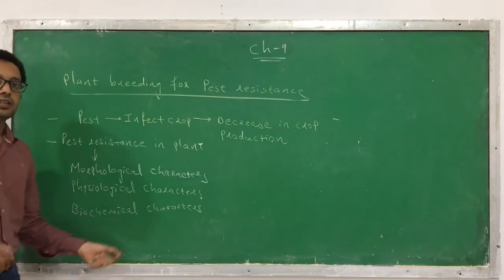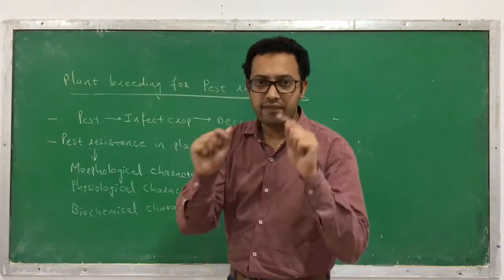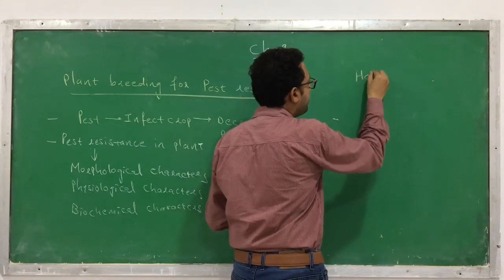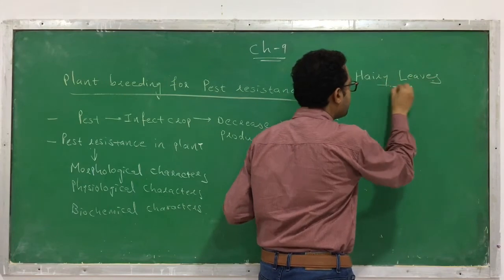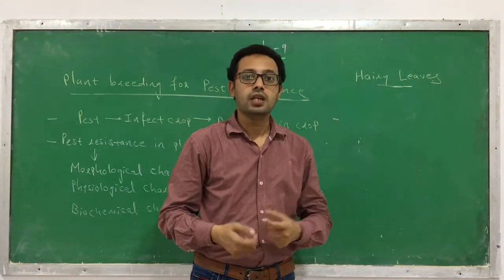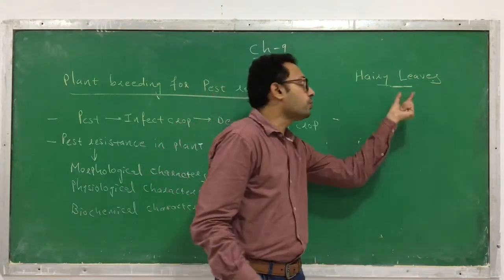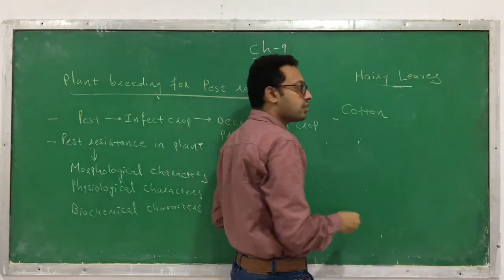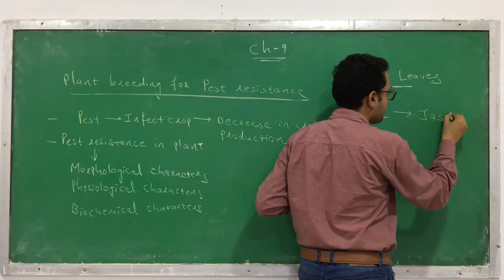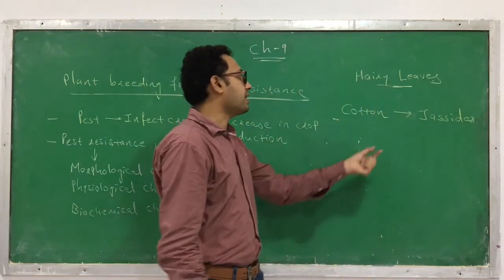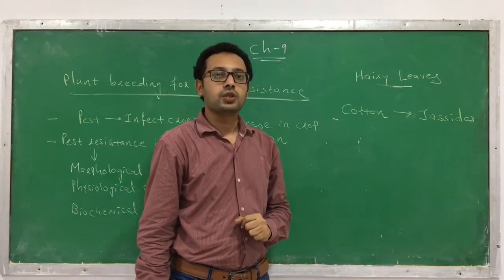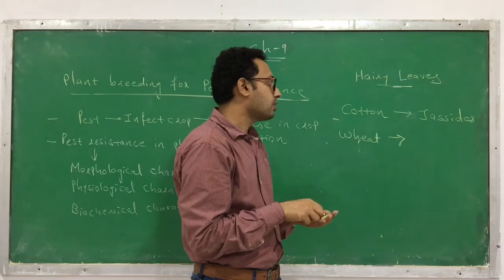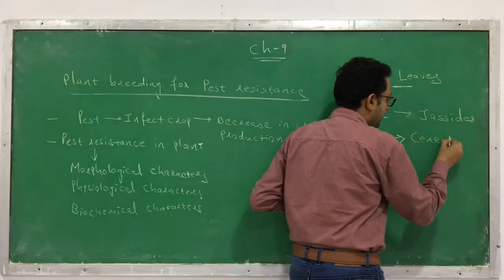Due to either of these factors, the plant itself has its own pest resistance. For example, certain plants have hairy leaves — that is, leaves with hair on their surface. This is a morphological feature. For example, the cotton plant has hairy leaves which protect it against jassids. Similarly, the wheat plant also shows resistance due to the presence of hairy leaves and is resistant against cereal leaf beetles.